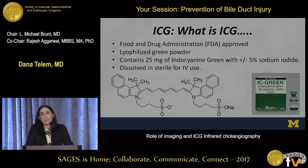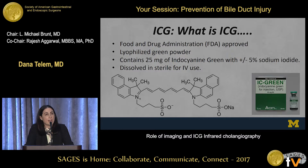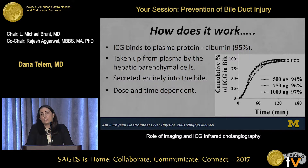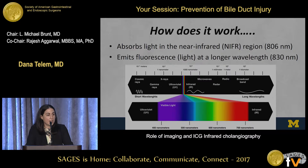That brings me to ICG — the new kid on the block, a very hot topic. ICG is essentially a lyophilized — a very fancy way of saying dehydrated — green powder. It has 25 milligrams of indocyanine green with sodium iodide, dissolved in sterile water for IV use. It binds to plasma proteins, namely albumin, circulates and is taken up by the hepatic parenchymal cells, then secreted entirely into the bile. It is dose and time dependent, so something preferentially secreted through the bile poses something interesting when we're trying to identify anatomy.